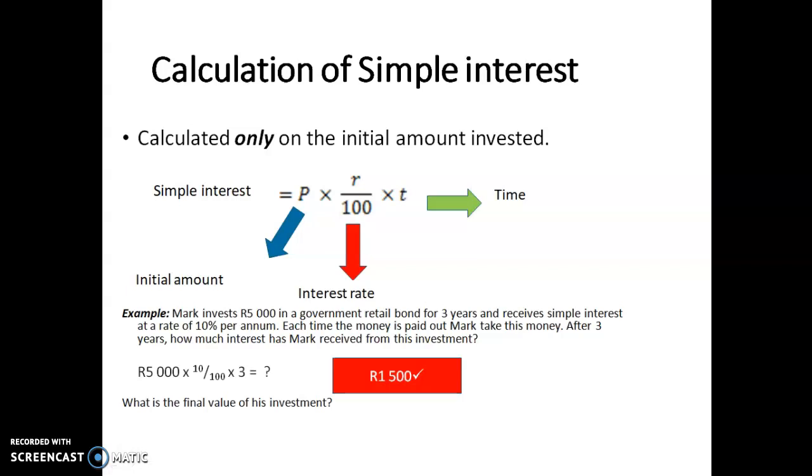The next question says, what is the final value of his investment? In other words, at the end, how much has his investment been worth? He first put 5,000 rand in, plus he earned 1,500, so his final value of investment is 6,500.